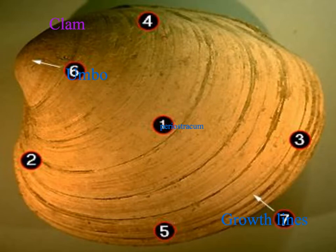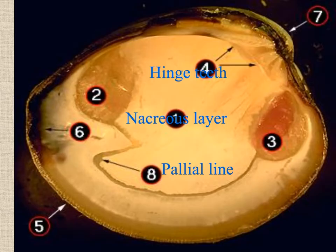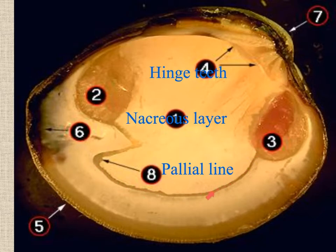On the clam, know that the bump we see is called the umbo, and the lines we see are the growth lines. The dark covering is the periostracum. On the internal section of the clam shell, you will see the hinged teeth. The nacreous layer, which means mother of pearls, is the shiny pearl layer.